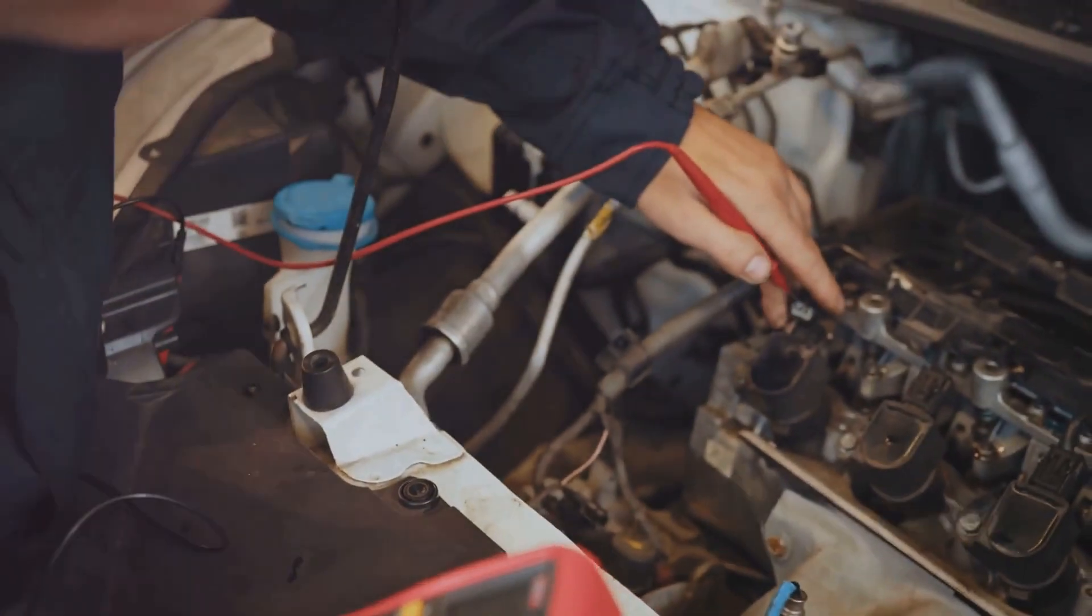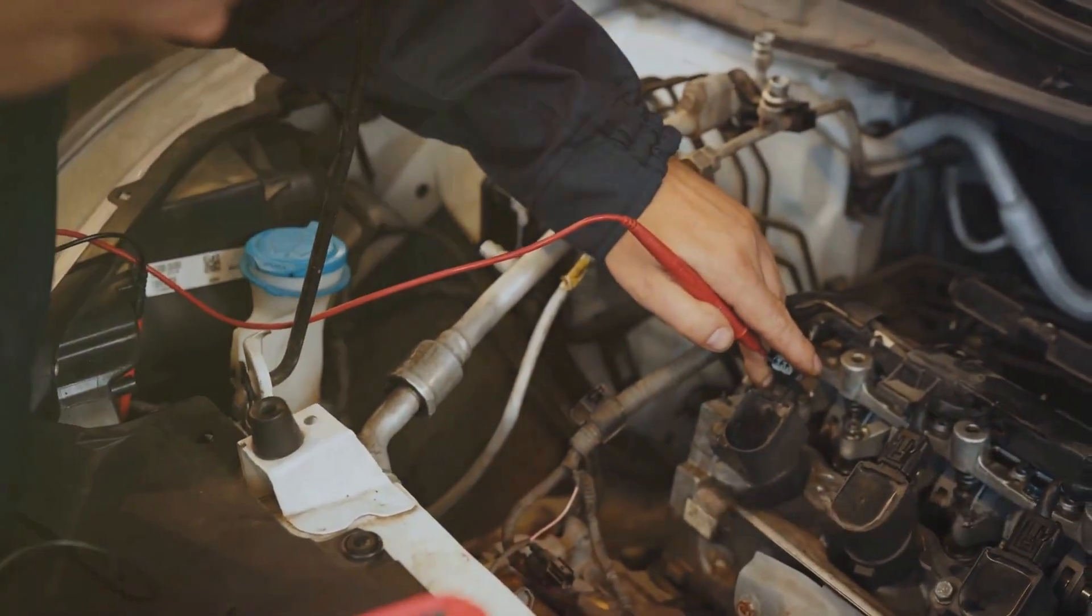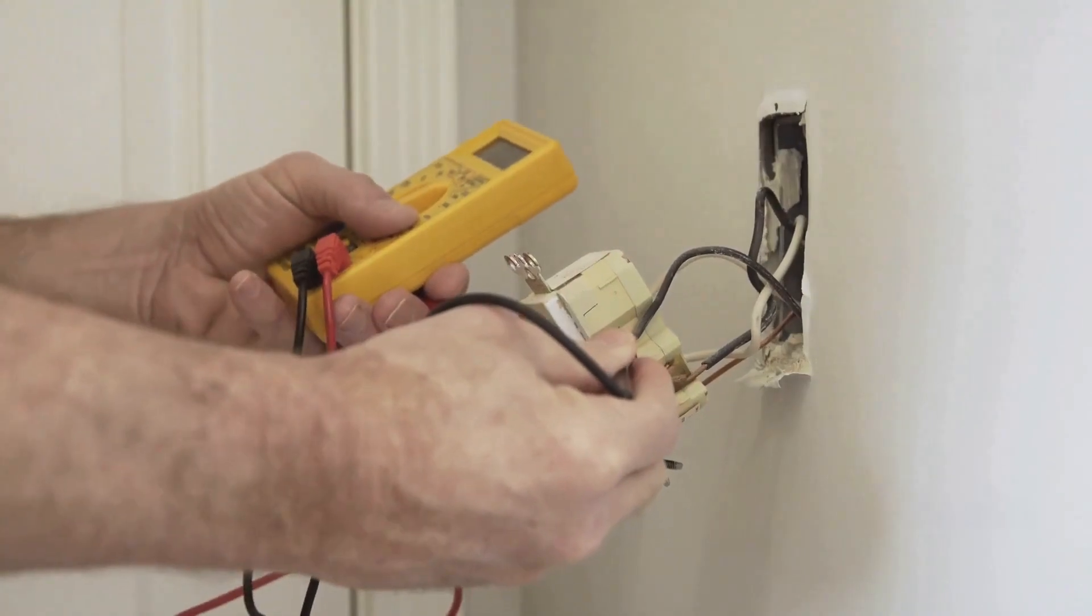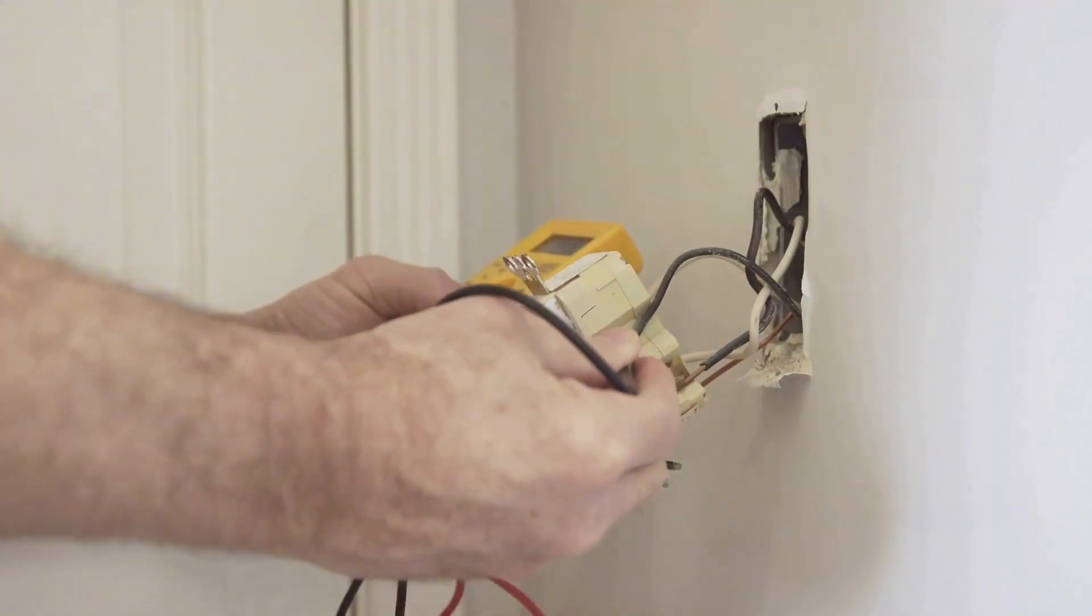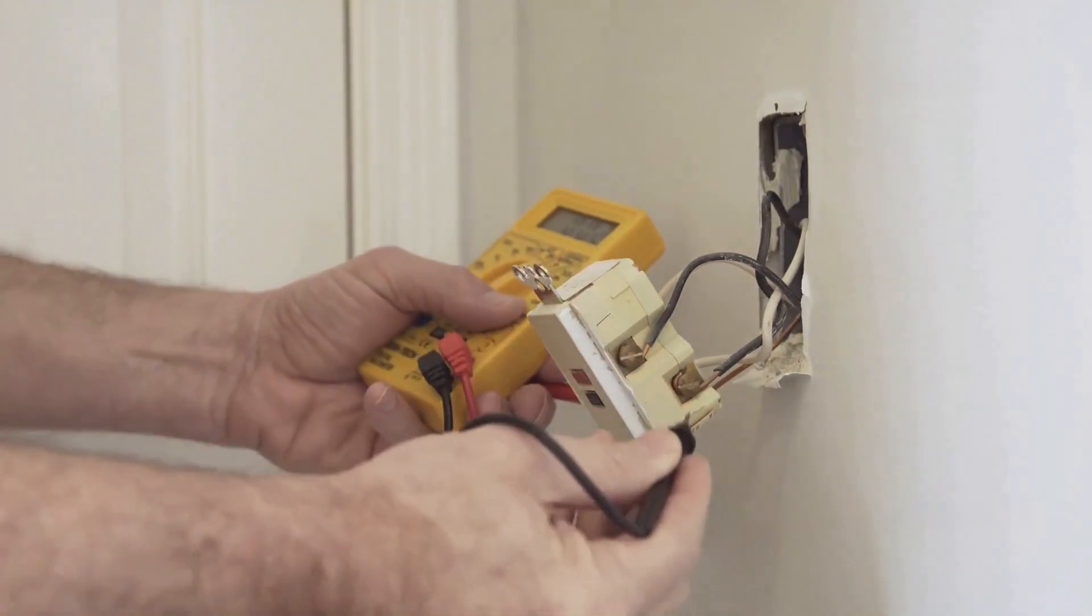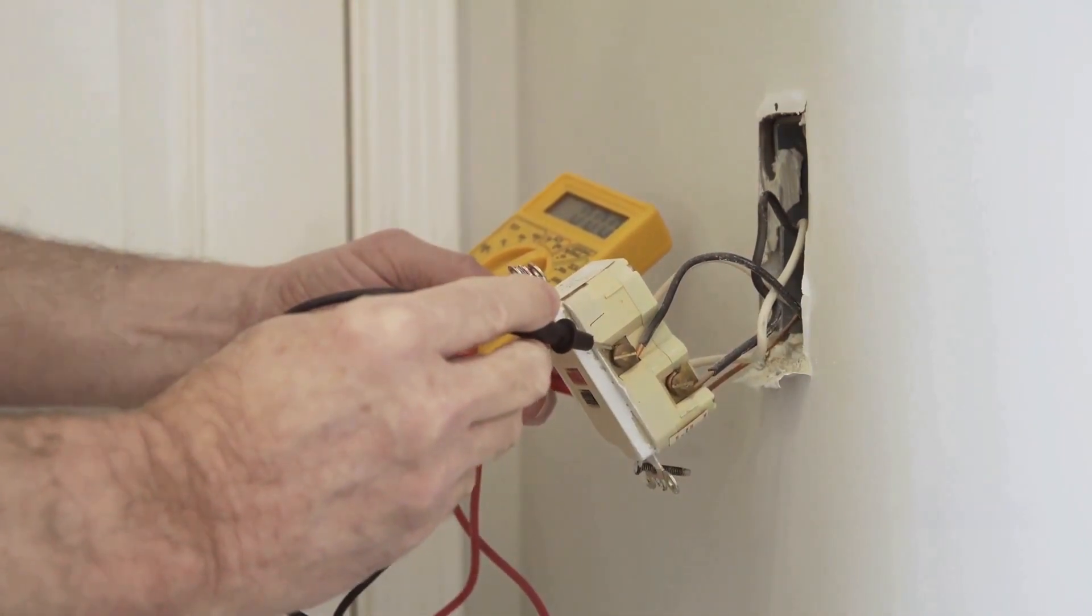First, safety is key. Always prioritize your safety when working with electrical devices. Make sure your multimeter is turned off and you're not connected to any power source. This is crucial to avoid any accidental shocks or damage to the device.